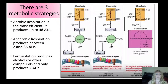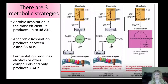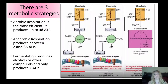Aerobic respiration is the most efficient, producing up to 38 ATP. Anaerobic respiration can vary between 2 and 36 ATP depending on the method used. Fermentation is the least efficient, producing a maximum of only 2 ATP.